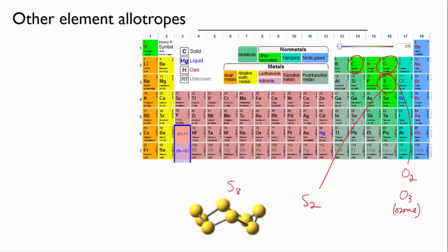Phosphorus takes a number of forms. The incredibly flammable white phosphorus is made of P4 molecules, where the atoms are bound in a tetrahedron.